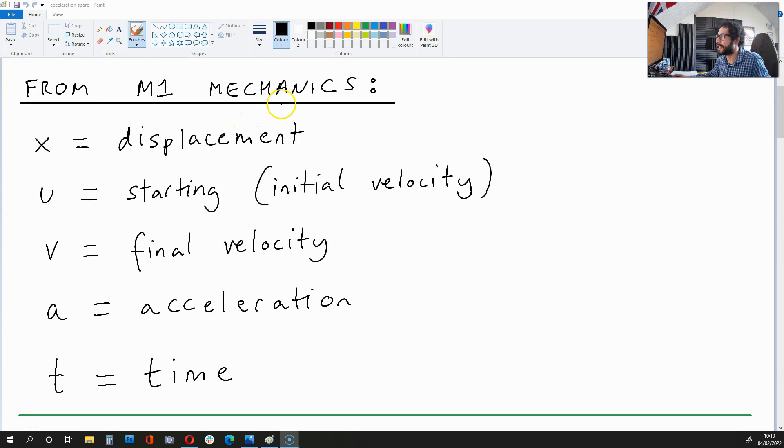To demonstrate this, you need to know that in mechanics, x is for displacement, u is for starting initial velocity, v is for final velocity, a is for acceleration, and t is for time.